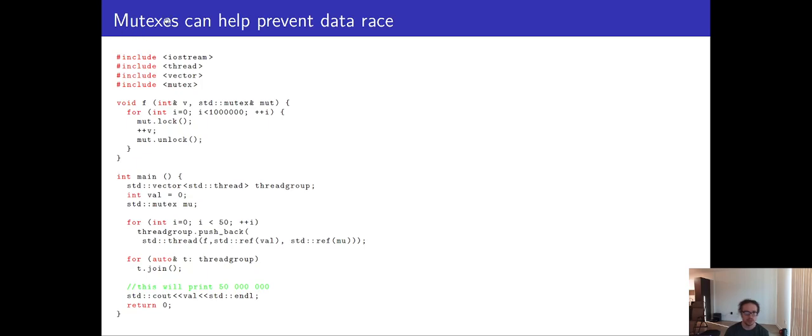So mutexes can help prevent data races. We know this. We talked about this in the last video. We have a function f here that has a mutex and a variable v. These are references, and so all 50 of our threads share these two objects. And we perform some very simple incrementation on it, ensuring that we lock before we access v so that we have mutual exclusion.